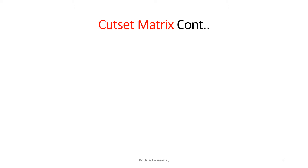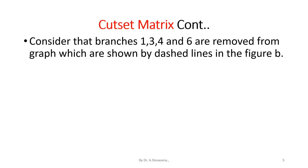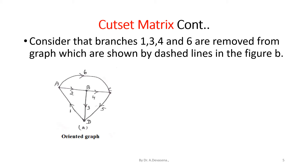Consider that branches 1, 3, 4, and 6 are removed from the graph, which are shown by dashed lines in figure B. This is the representation of the graph which comprises of all the branches 1, 2, 3, 4, 5, 6. From this oriented graph, we are going to remove the branches 1, 3, 4, and 6. The removed branches are indicated in the dashed lines.